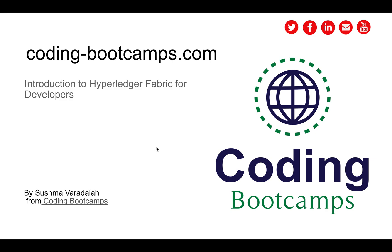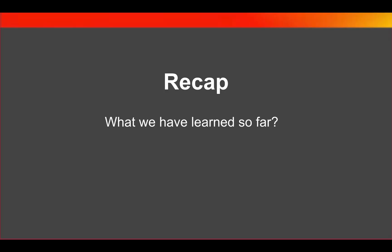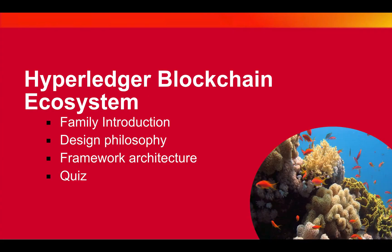Welcome back. In this section we are going to look into the Hyperledger blockchain ecosystem. In the previous section we learned how blockchain works, what blockchain structure looks like, what smart contracts are, and what the different types of consensus algorithms are. In this section we are going to look into the Hyperledger blockchain ecosystem, which includes the family introduction, design philosophy, and framework architecture of Hyperledger Fabric.